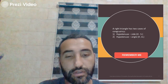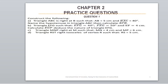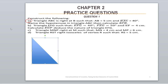Now let's start solving exercises from the worksheet. In question number one, construct the following. In part A, we have triangle ABC right at B, so we need to draw a triangle ABC which is right at B. Let me draw a triangle here, right at B, and we call it ABC. This triangle is right at B, so we have 90 degrees here.